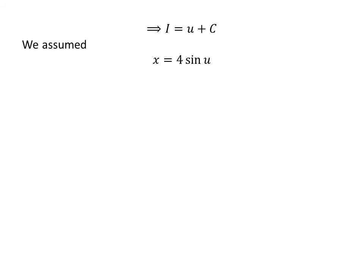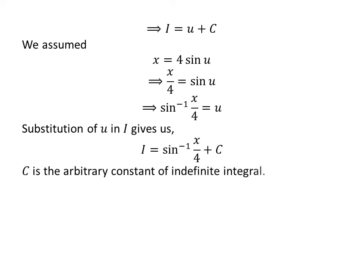We have assumed x is equal to 4 times sine of u. Taking 4 to the left hand side of the above equation gives us x upon 4 is equal to sine of u. As arc sine is the inverse function of sine, arc sine of x upon 4 is equal to u. Thus, replacing u by its value in the integral i gives us i is equal to arc sine of x upon 4 plus capital C.